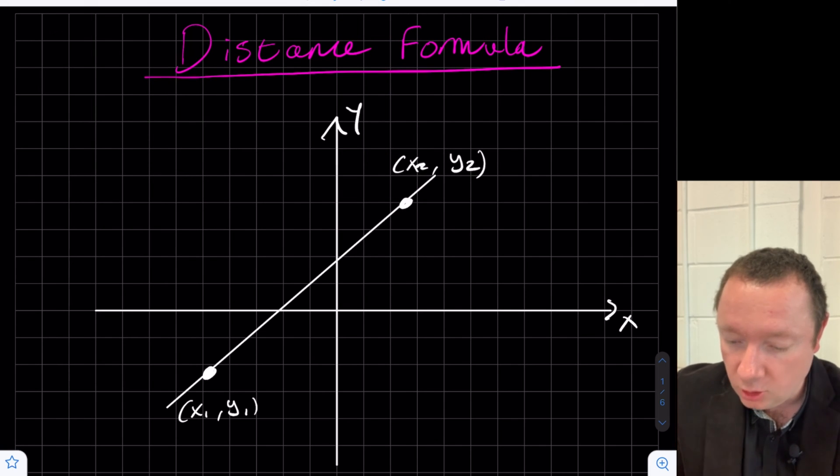And we've plotted two points. We've plotted point 1, which is x1, y1, and point 2, which is x2, y2. And it's a diagonal line.